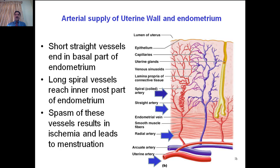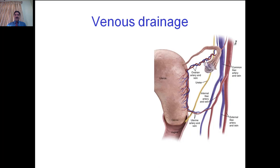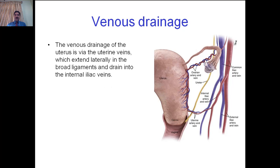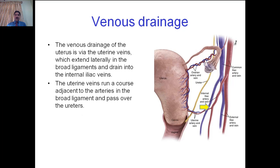Venous drainage of the uterus follows the arteries. The uterine venous plexus extends laterally in the broad ligament and drains into the internal iliac veins. The uterine veins run adjacent to the arteries in the broad ligament and, like the arteries, pass over the ureters. Both uterine artery and veins pass over the ureter, while the ureter passes below them. The uterine venous plexus anastomoses with the vaginal and ovarian venous plexuses.